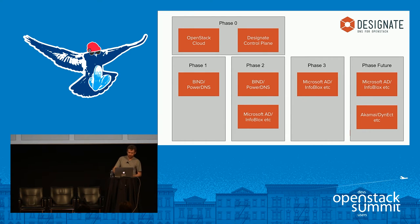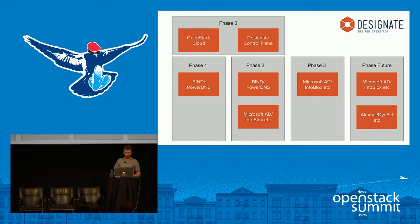In a private cloud environment we're going to work through a few phases. Phase zero is deploying OpenStack and getting the Designate control plane running. Then we'll move on to phases one, two, three, and some future work.